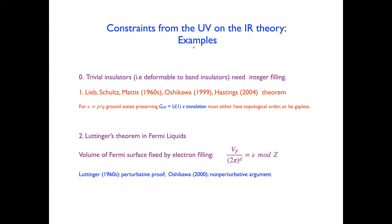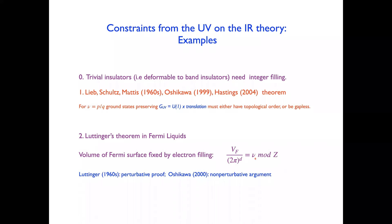We already know many examples of constraints from IR symmetries in systems with these symmetries. The most well-known example is that trivial insulators — things you can deform to band insulators — need integer filling per flavor per spin. We all know the Lieb-Schultz-Mattis-Oshikawa-Hastings theorem: if the filling nu is p over q, ground states that preserve these symmetries must either have topological order or be gapless. Finally, in a Fermi liquid, Luttinger's theorem fixes the volume of the Fermi surface divided by (2 pi)^d to equal nu modulo an integer. Luttinger's theorem was proved by Luttinger in the 1960s, and there is a nice argument by Oshikawa from about 20 years back.